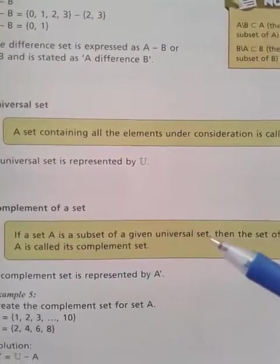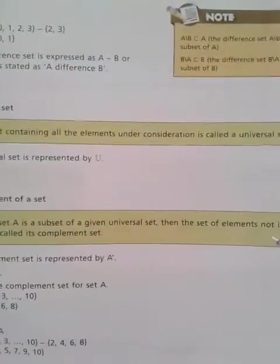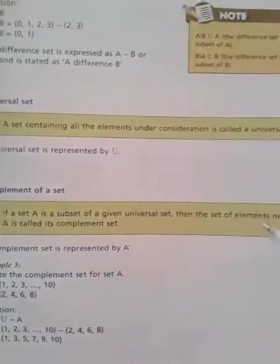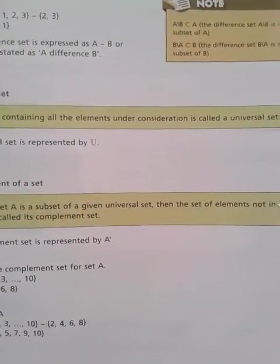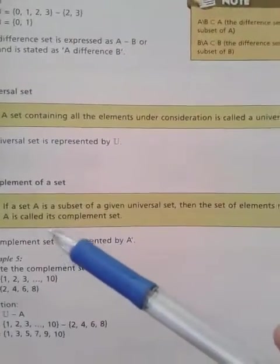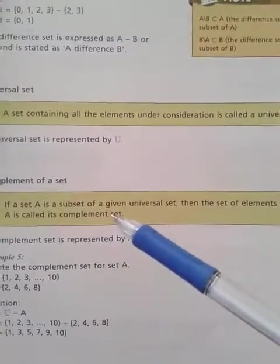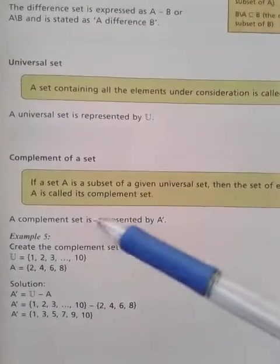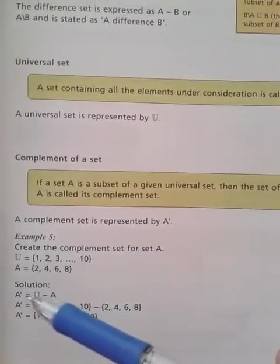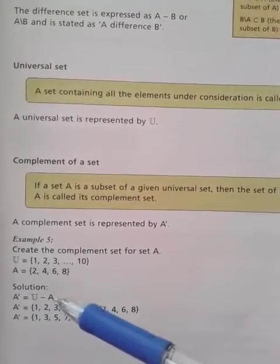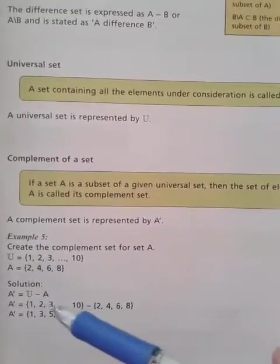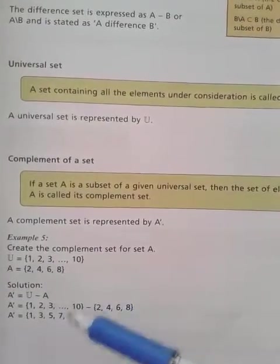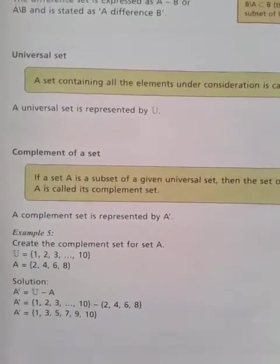Complement: If set A is a subset of the given universal set, then the set of elements not in A is called its complement. For example, to find the complement of A, you calculate U minus A — that is, you take all elements of the universal set and remove those which are in set A.